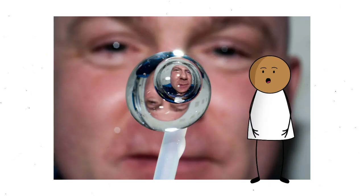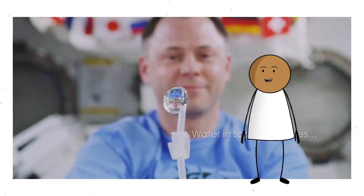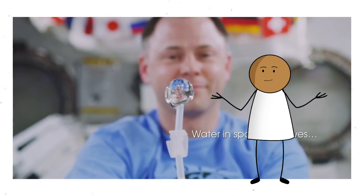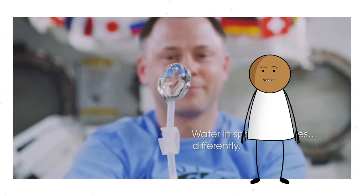Astronauts aboard the International Space Station have to deal with this blob behavior every day. In microgravity, water forms perfect little spheres, and they just hang there. You can poke them, split them, even drink them straight from a floating bubble. It's like watching a nature documentary about liquids that forgot how to fall.